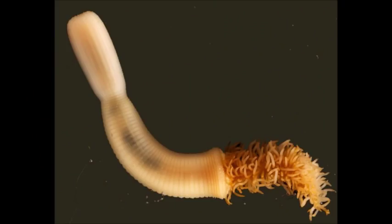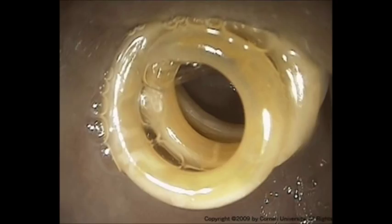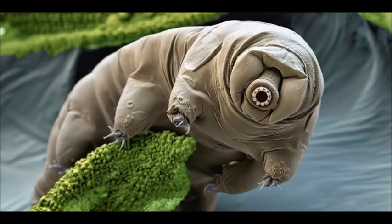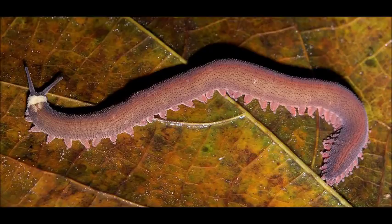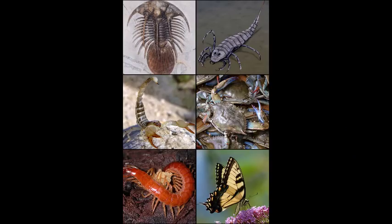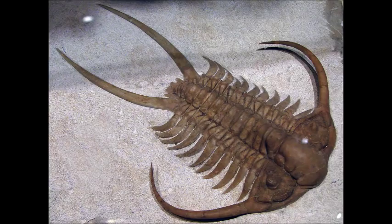This clade contains penis worms, roundworms, tardigrades, velvet worms, and arthropods. Arthropods originated at the start of the Cambrian, and the origin and evolution of this clade could occupy an entire video in and of itself.